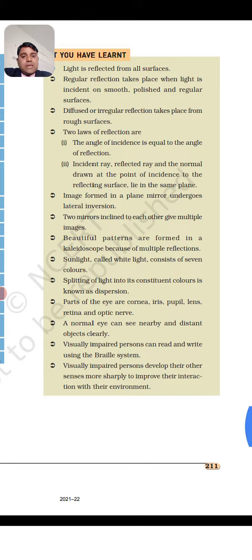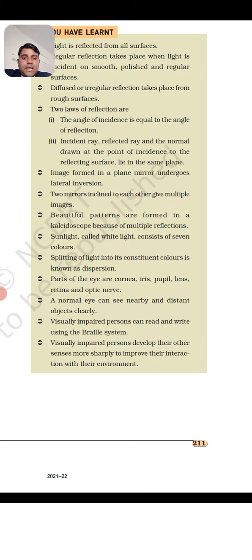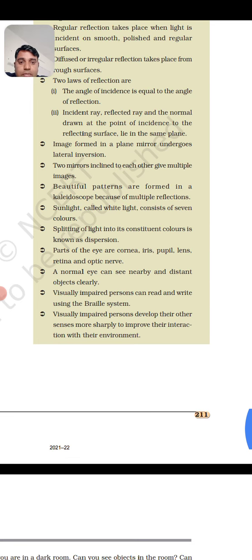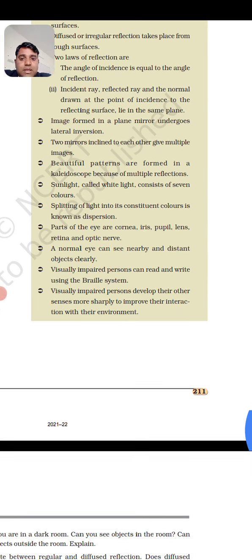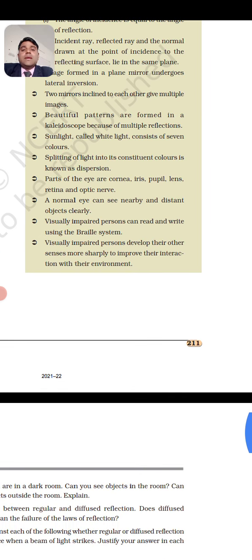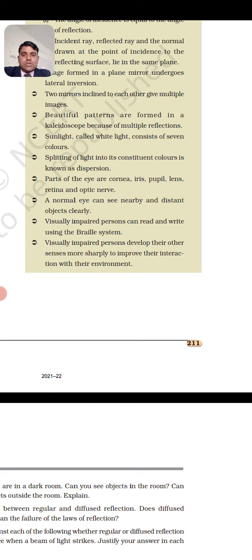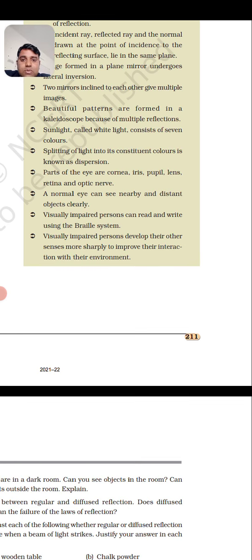These two laws of reflection are very important points. Image formed in a plane mirror undergoes lateral inversion — jab aap kisi mirror mein dekhte hain toh lateral inversion hota hai; right ki jo object hai voh left part ki aur dikhti hai. Two mirrors inclined to each other give multiple images. Beautiful patterns are formed in a kaleidoscope because of multiple reflections. Sunlight, called white light, consists of seven colors (VIBGYOR). Splitting of light into its constituent colors is known as dispersion.